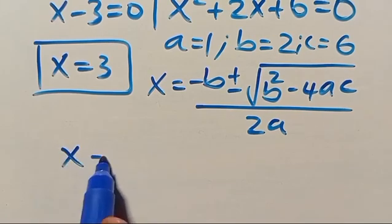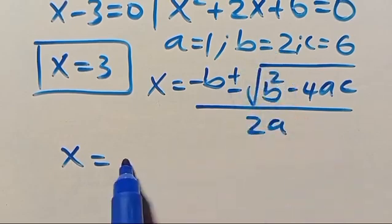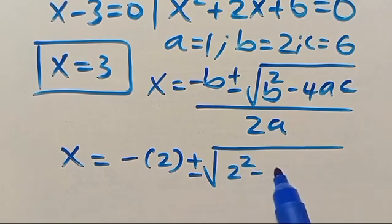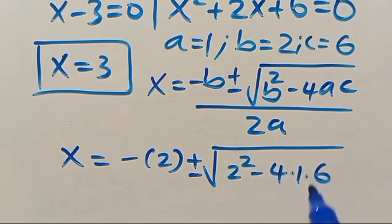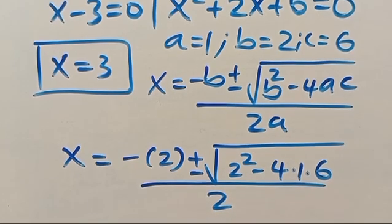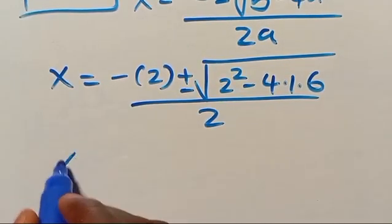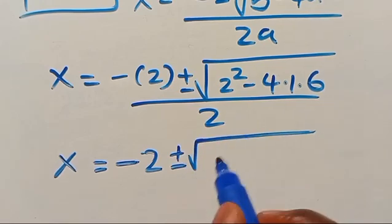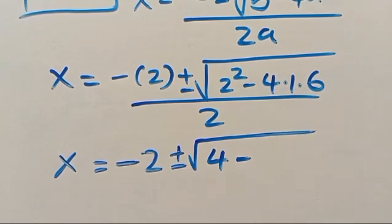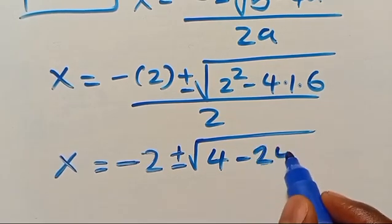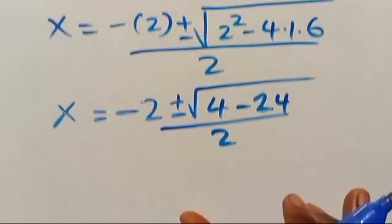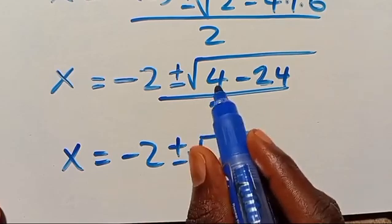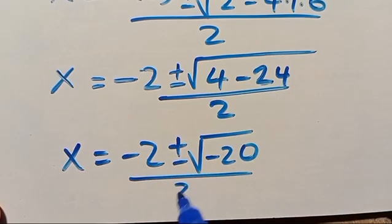From the second factor, to get the value of x we apply the quadratic formula: x equals minus b plus or minus root of b squared minus 4ac, divided by 2a. The parameter a is the coefficient of x squared, which is 1; b is the coefficient of x, which is 2; and c equals 6. Substituting: x equals minus 2 plus or minus root of 2 squared minus 4 times 1 times 6, divided by 2. That gives root of 4 minus 24, which is minus 20, divided by 2.